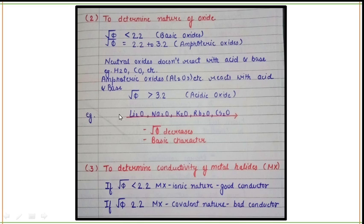For an acidic oxide, the value of √φ should be more than 3.2. If the value of phi is decreasing in a particular order, the basic character will increase.